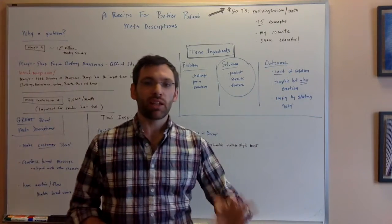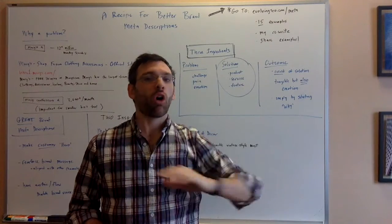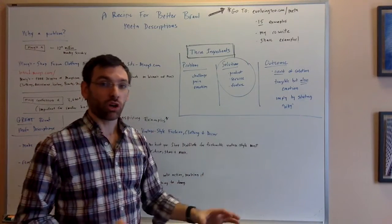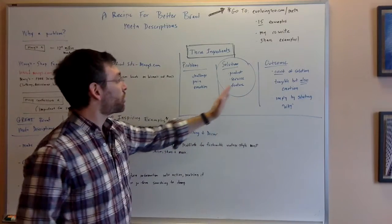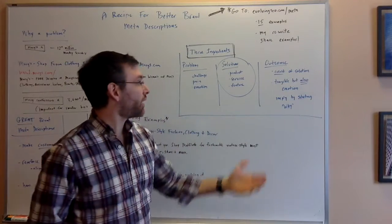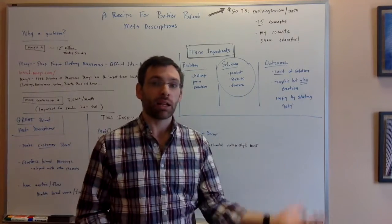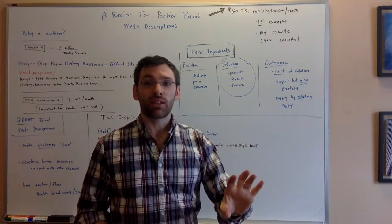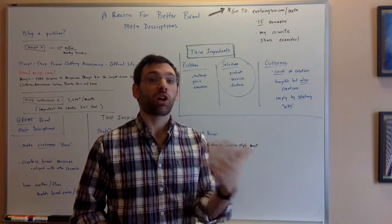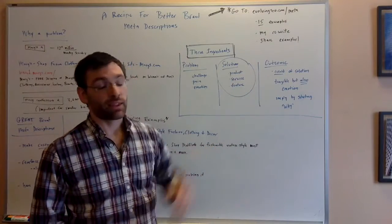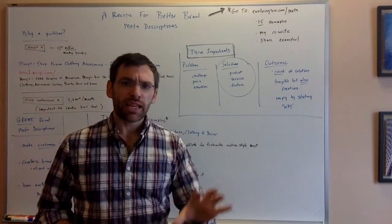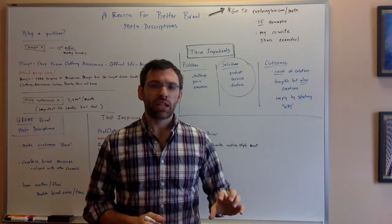So very often, the mistake that people make is they include only this in their meta description because it's natural and easy to list your product, to list your service, to list your features. It comes naturally to the person that that's their world. If you're selling shoes, you're going to list shoes. That's your world. That's the thing that you are immediately going to think of. Number three, and this is the really critical piece. If you do this right, you're going to be way ahead of all of the other meta descriptions out there. You want to highlight the outcome. You want to paint a picture of the result of the solution.